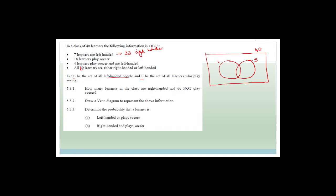The whole of circle L has to total seven, and the whole of circle S has to total 18. Four learners play soccer and are left-handed, so the intersection is four. Therefore, three are left-handed and do not play soccer. Similarly, we've got 18 soccer players — four happen to be left-handed, so the remaining 14 are right-handed soccer players.